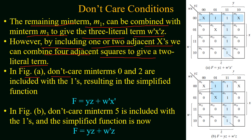In figure (a), the don't cares at 0 and 2 are included with the ones, resulting in the simplified function equal to the sum of y·z and w'x'. In figure (b), the don't care min term 5 is included with the ones, and the simplified function is the sum of y·z and w'·z.